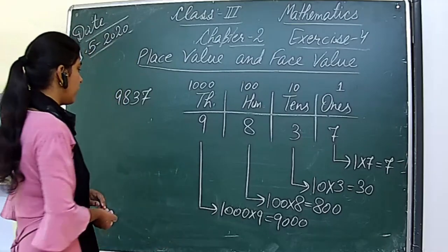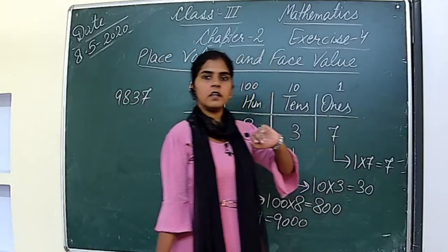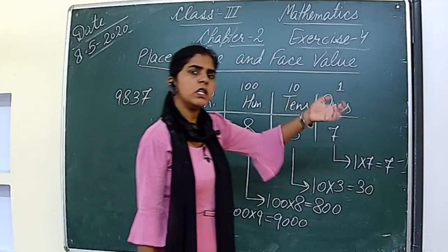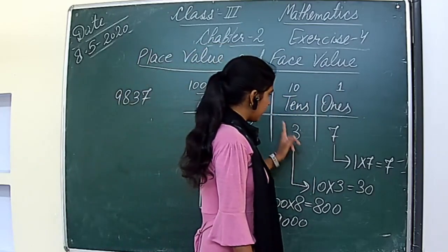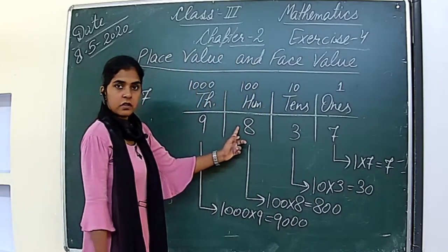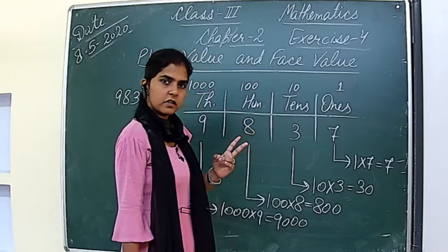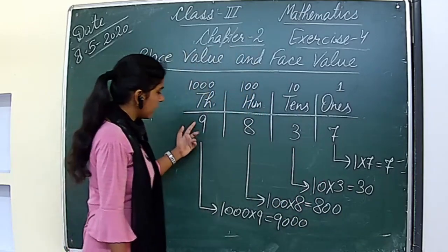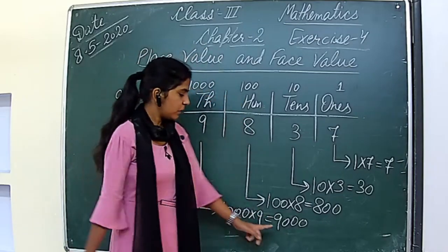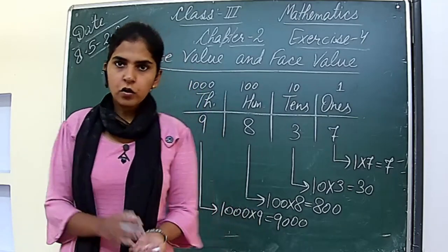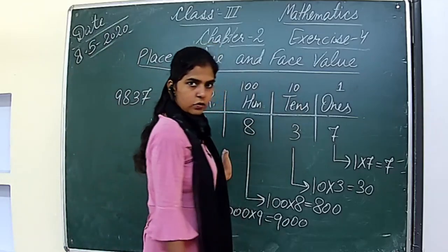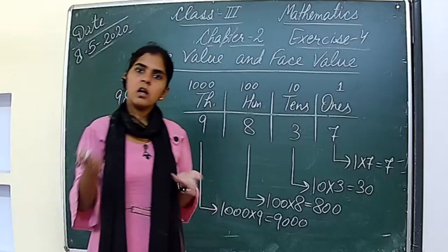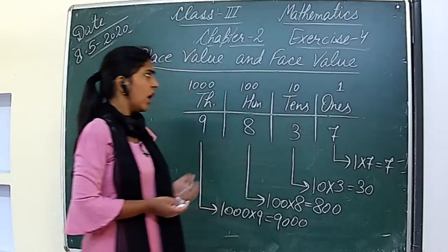The second way to write place value: after 7, no digits are there, so place value of 7 is 7. After 3, one digit is there, so place value of 3 is 30. After 8, two digits are there, so place value of 8 is 800. After 9, three digits are there, so place value of 9 is 9000. This is how place values can be written quickly.